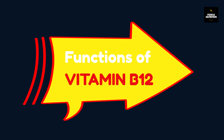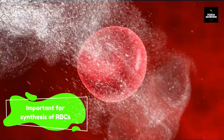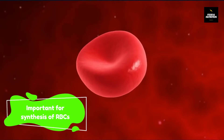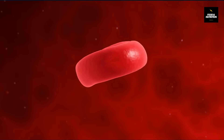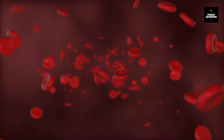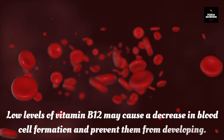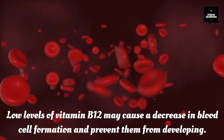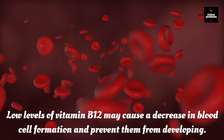Vitamin B12 plays various important roles in the human body. Number 1: it is important for the synthesis of red blood cells. Vitamin B12 plays a very important role in the production of erythrocytes and prevents anemia. Low levels of vitamin B12 may cause a decrease in blood cell formation and prevent them from developing properly.